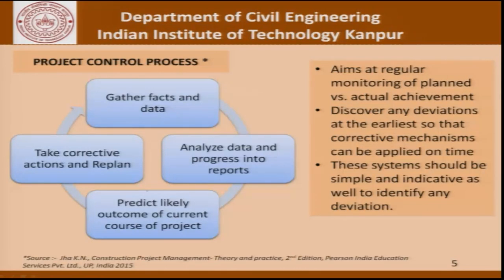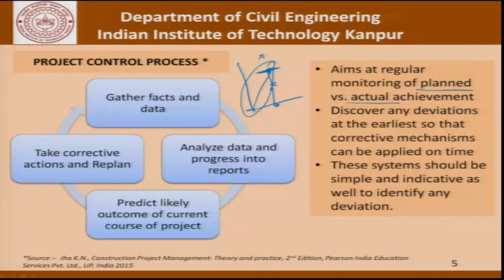The idea of a project control process is that it aims to regularly monitor the planned versus actual achievement. In a graph, if we wanted to be at a certain point at a particular time, the idea is to check whether we have reached that point, whether we are slipping, or whether we are ahead of schedule. This planned versus actual achievement is the backbone of the project control process. It discovers any deviations at the earliest so that corrective mechanisms can be applied on time. These systems should be simple and indicative to identify any deviation.